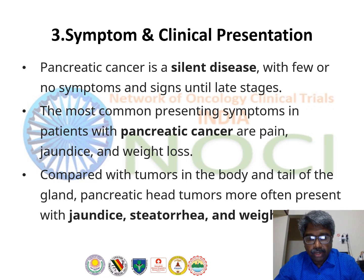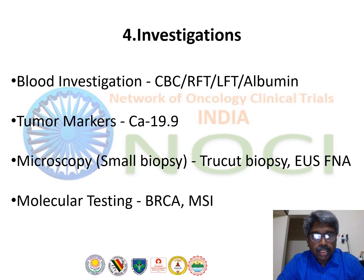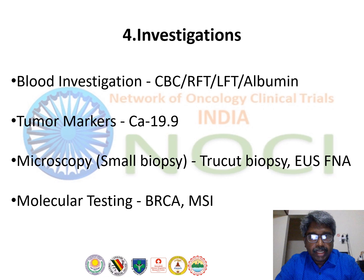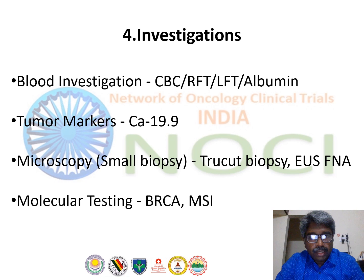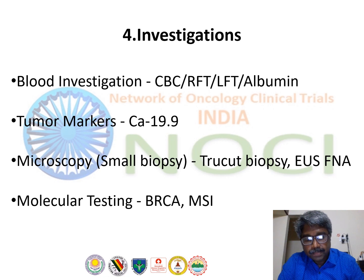For investigations, routine blood tests including complete blood count, renal function test, liver function test, and albumin are to be done. In selected cases, amylase and lipase may also be done. Tumor marker CA 19-9 is important in pancreatic cancer for both diagnostic purposes and follow-up. For microscopy, biopsy — either a trucut biopsy (often not feasible for pancreatic masses) or EUS-guided FNAC — is performed in the majority of patients.